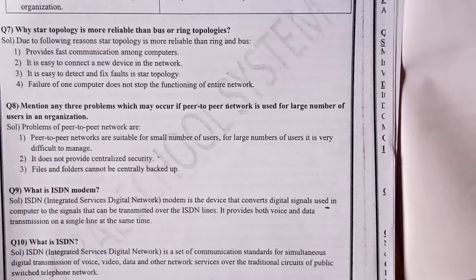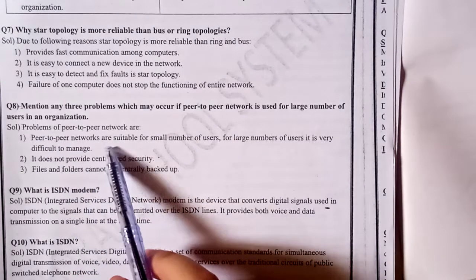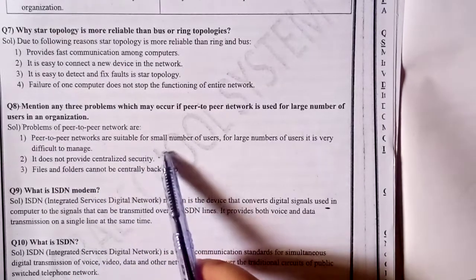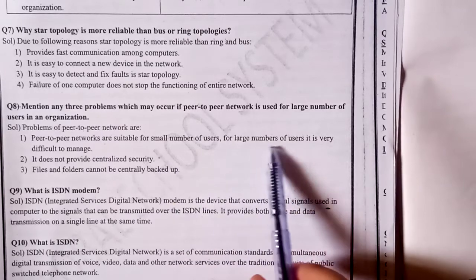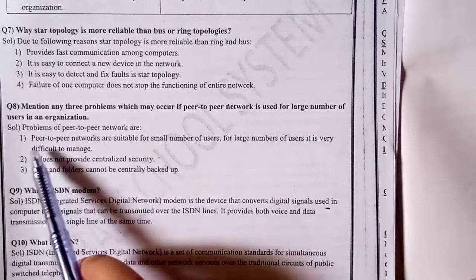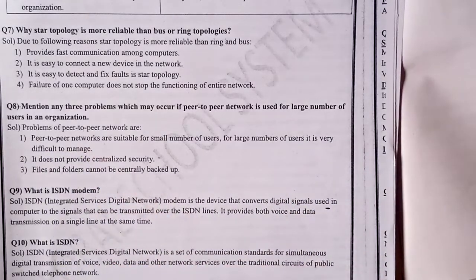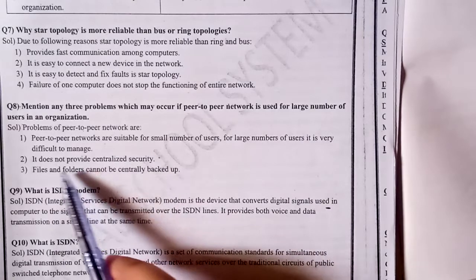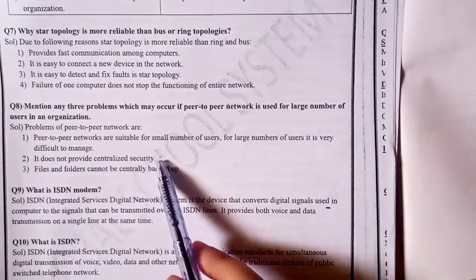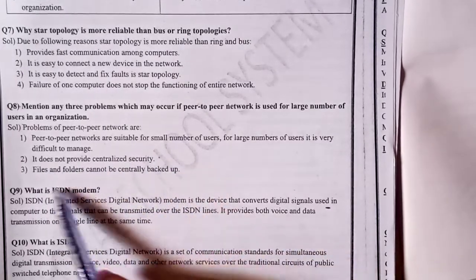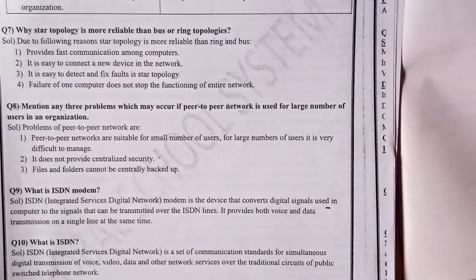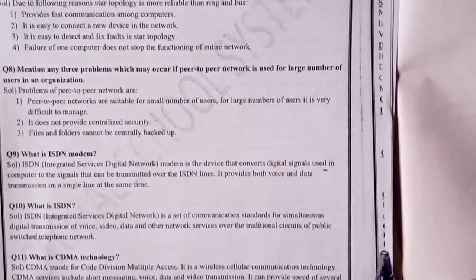Question: Mention any three problems which may occur if a peer-to-peer network is used for a large number of users in an organization. Problems of peer-to-peer network: Peer-to-peer networks are suitable for a small number of users; for a large number of users, it is difficult to manage. It does not provide centralized security. Files and folders cannot be centrally backed up.